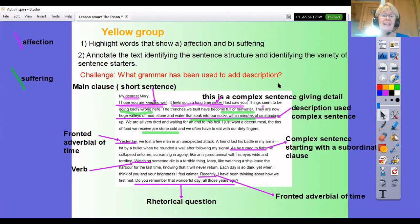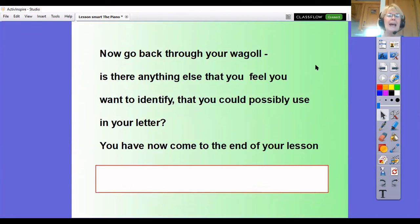And remember, can you identify any of your challenges, can you identify the grammar that's been used to add the description. So Yellow Group that is your task for today. When you have done it I would like you to go back through your wagoll, is there anything else that you feel you want to identify or to make a note of that you feel you could possibly use in your letter writing throughout this week. When you've done that you have now come to the end of the lesson. Don't forget to send it into your class teacher at the end of the day.